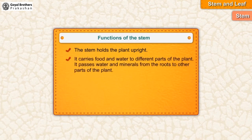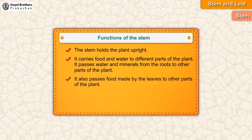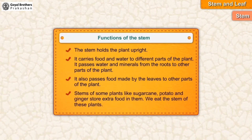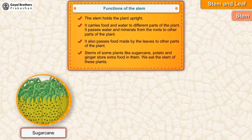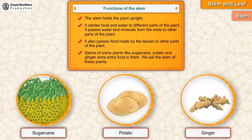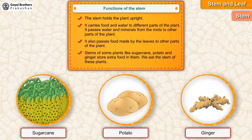The stem carries food and water to different parts of the plant. It passes water and minerals from the roots to other parts, and also passes food made by the leaves to other parts of the plant. Stems of some plants like sugarcane, potato, and ginger store extra food in them, and we eat the stem of these plants.